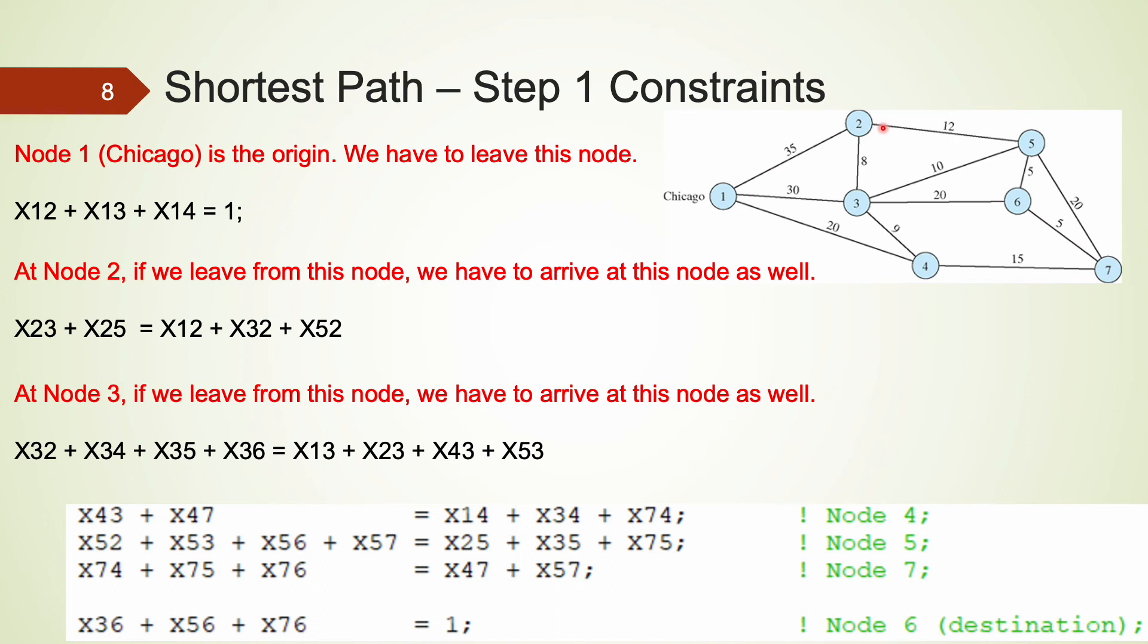If x2,3 and x2,5 is 1, that means we leave from this node. We have to make sure that the sum of x1,2, x3,2, and x5,2 is also 1. If we don't pass through this node 2, that means x2,3 plus x2,5 is 0. We also need to make sure that x1,2, x3,2, and x5,2 is 0.